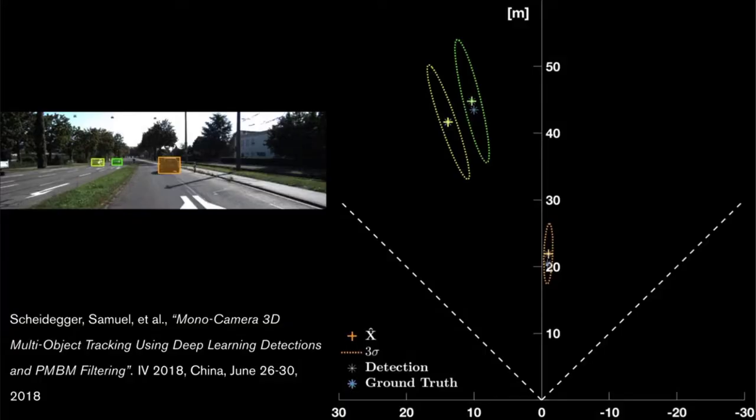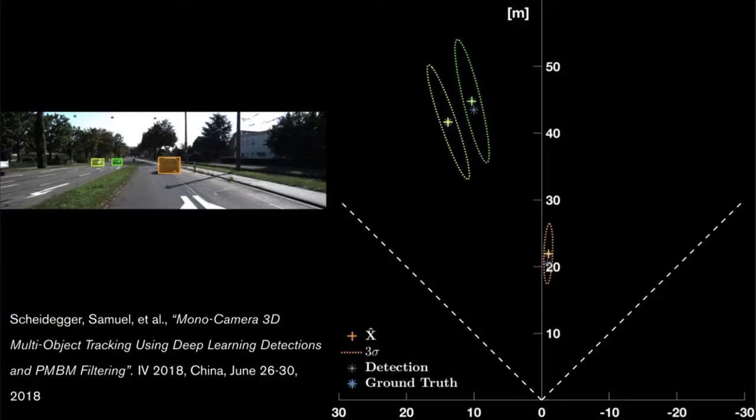This first example concerns tracking vehicles using observations from a monocamera and comes from this paper by Samuel Scheidegger in 2018. The aim is to estimate the 3D position and velocity of vehicles from a sequence of images,